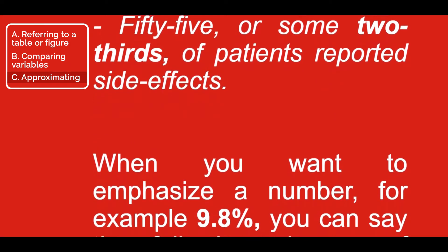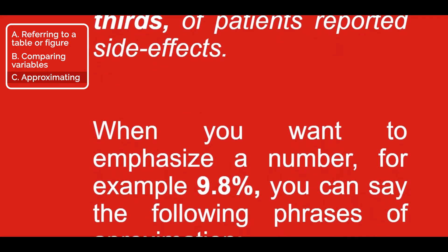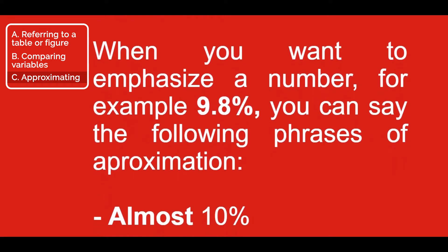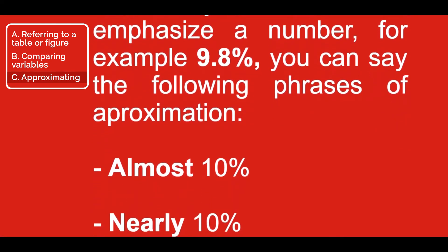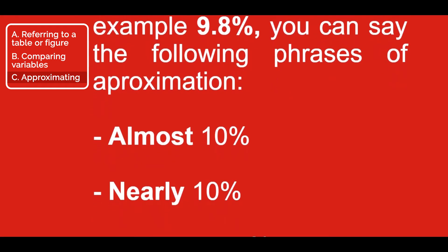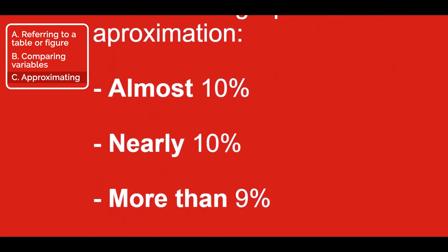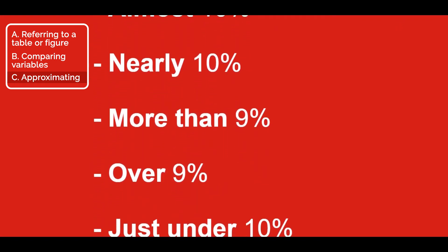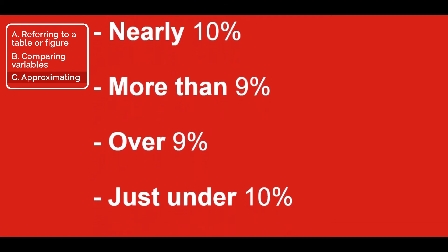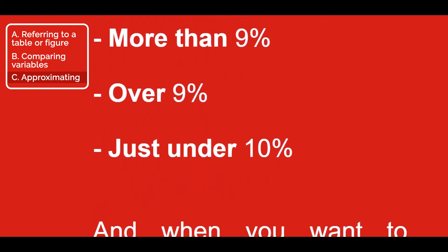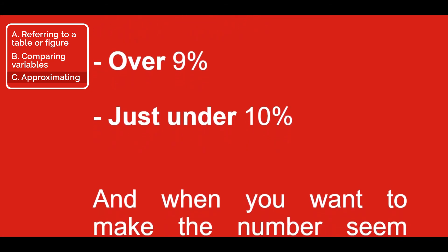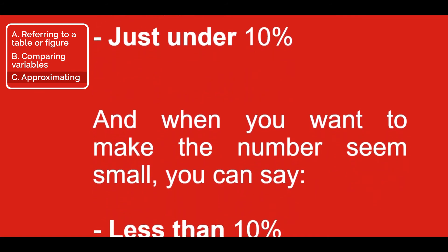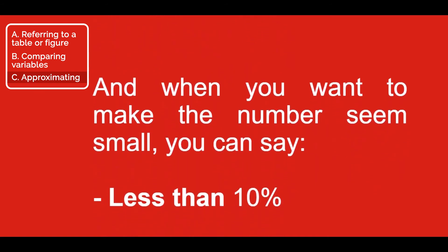When you want to emphasize a number — for example, 9.8% — you can use the following phrases of approximation: 'almost 10%,' 'nearly 10%,' 'more than 9%,' 'over 9%,' 'just under 10%.' And when you want to make the number seem small, you can say 'less than 10%.'